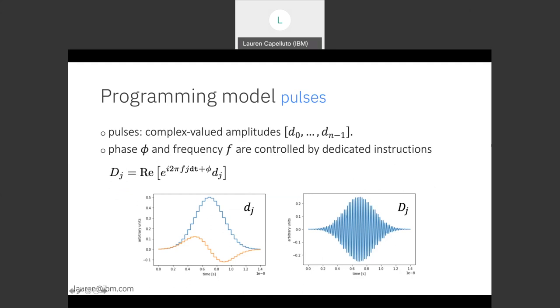Naturally pulses are a pretty central aspect of the pulse programming model. So the pulses in our system are actually the complex valued amplitudes. They are separate from the phase and frequency which are controlled by separate instructions. So in the bottom left we have an example of a pulse. This is our pulse envelope for in this case a drag pulse.